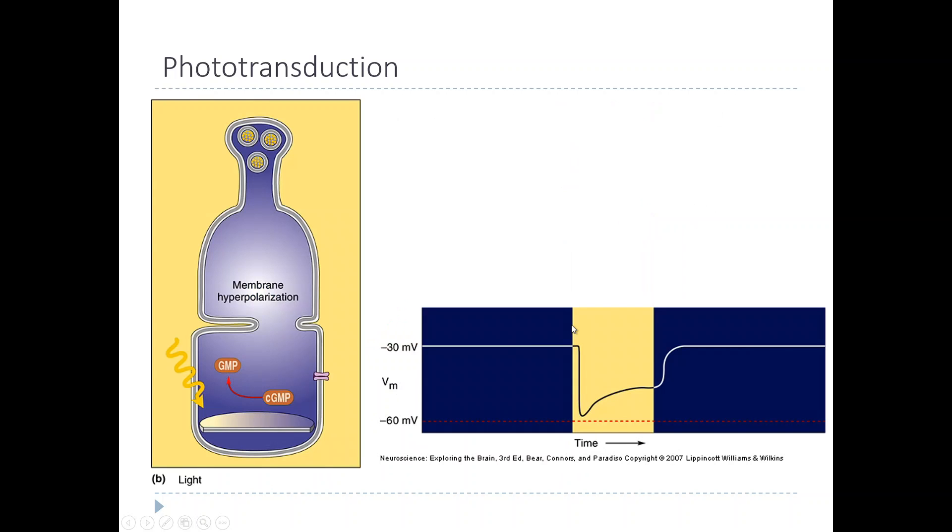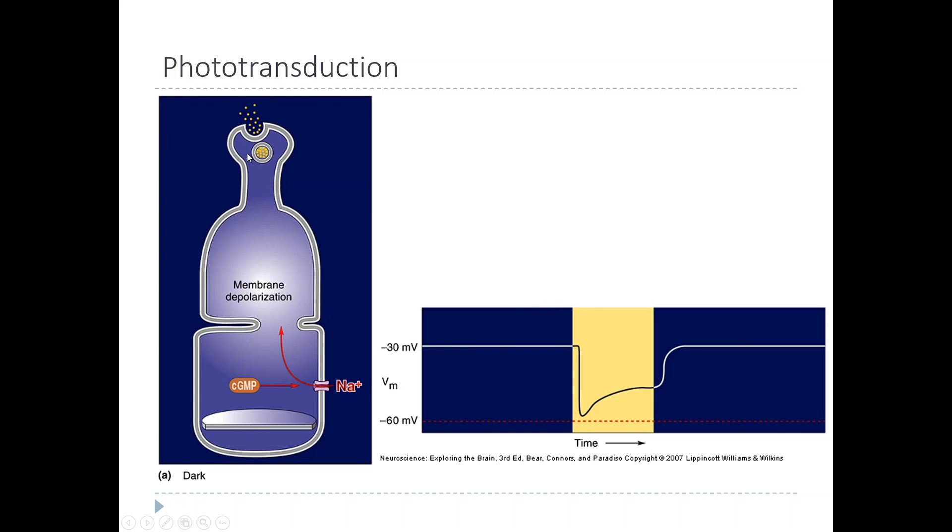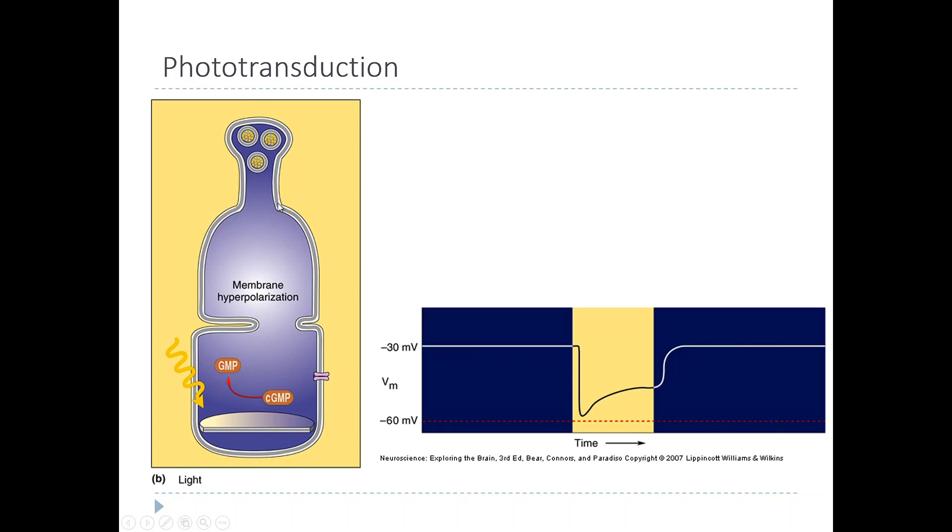That means that effectively cells are active in the dark, meaning that they are releasing neurotransmitter in the dark. This depolarization leads to the release of neurotransmitter, which in turn triggers the activation of bipolar cells. But in the light, they become inactive. In the light, there's a hyperpolarized membrane and these synaptic vesicles do not get released. It's a little bit counterintuitive because you might think that a light detecting cell would become active in light and become inactive in the dark, but it turns out to be backwards in the case of photoreceptors.